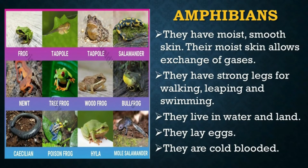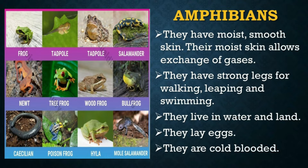Amphibians have moist, smooth skin that must remain moist in order to survive. Their moist skin allows exchange of gases. They have strong legs for walking, lifting, and swimming. Male amphibians fertilize the eggs laid by the female amphibians; thus, fertilization is external. When young, they breathe through gills, and as adults, they breathe through their lungs. They are also cold-blooded animals. They live both in water and land. Some examples of this group are frog, lizard, and salamander.